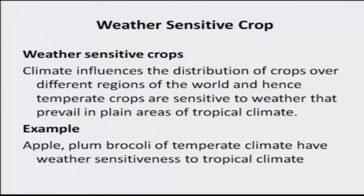Weather sensitive crops: the climate influences the distribution of crops over different regions of the world. Temperate crops are sensitive to weather that prevails in plain areas of tropical climate. For example, apple, plum, and broccoli of temperate climate are weather sensitive to tropical climate. Accordingly, we have to prepare our agro-advisories based on the weather forecast, which we will be detailing in later classes.